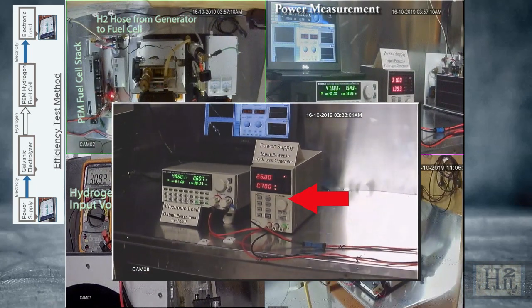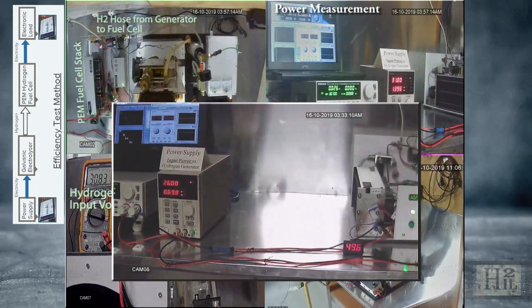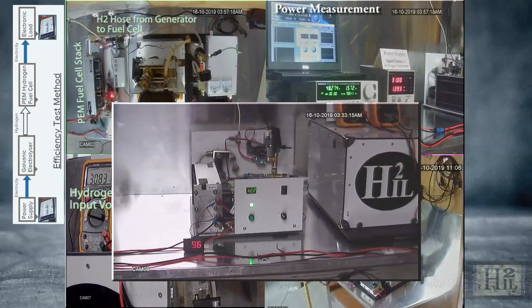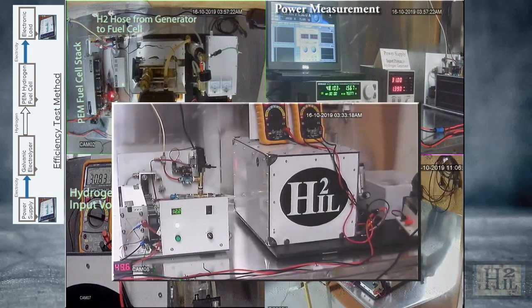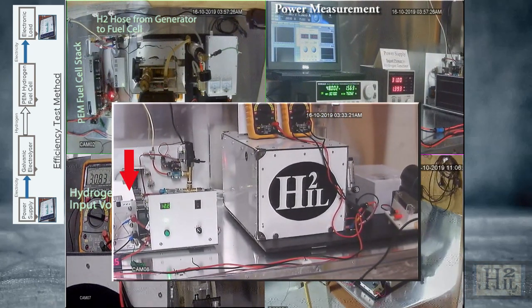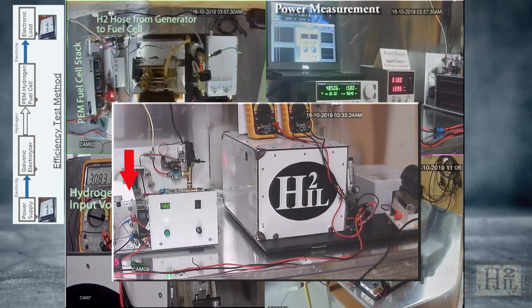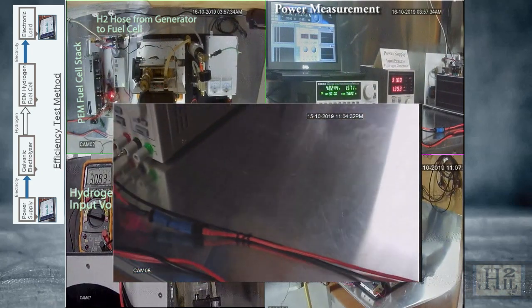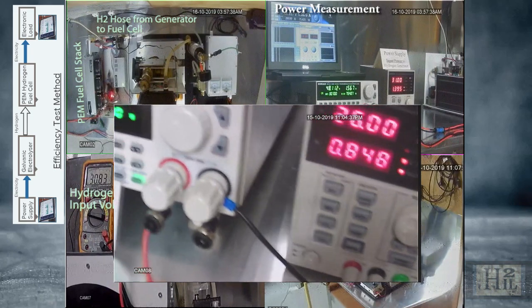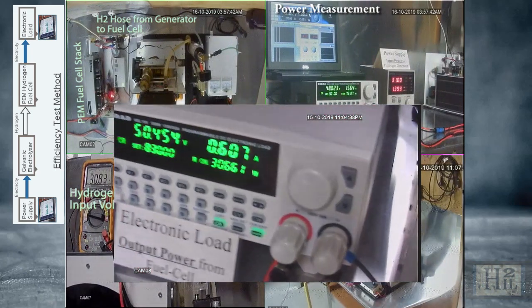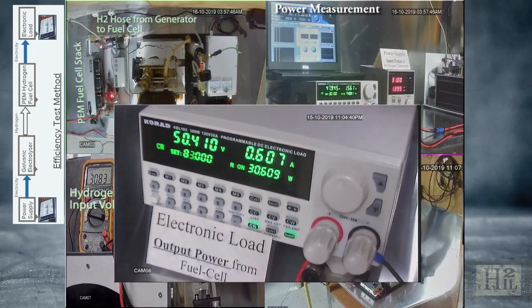The data-logged power supply inputs electricity to the galvanic enhanced electrolyzer which generates hydrogen gas to fuel the PEM fuel cell. The output of the fuel cell is connected to an electronic load test device to apply a load and measure the output power.